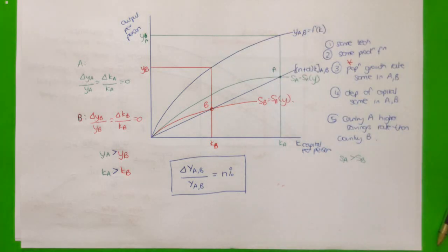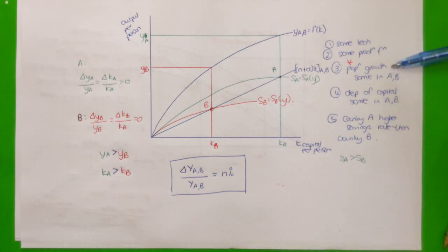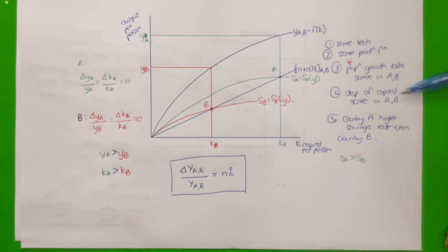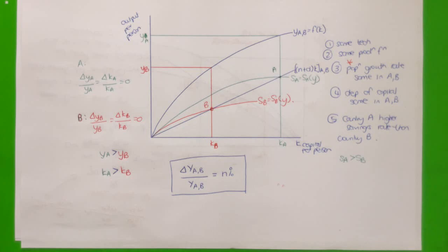You can also think about a situation where the countries have the same technology, the same production function, the same population growth rates, and the same savings rates, but perhaps different depreciation rates of capital. In that case, you would need to work through a diagram to determine whether or not the countries would converge conditionally.